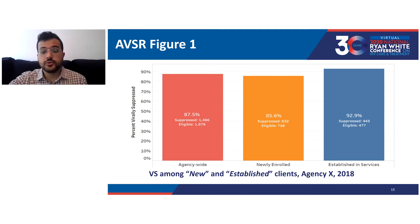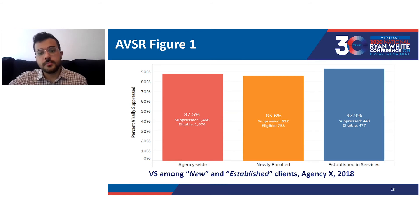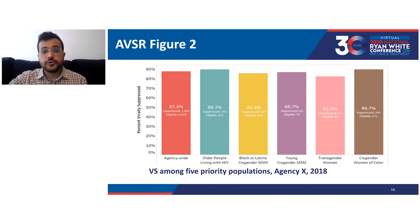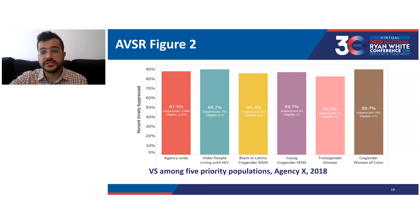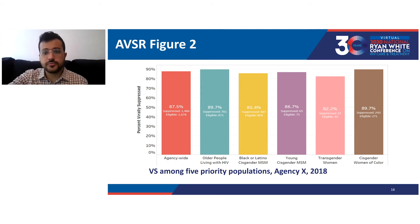Since the agency has had more time to address their needs and barriers, established clients tend to show higher viral suppression. However, not all agencies bear out that expectation, and we will look at that in the next section when we go over the results from the 2018 AVSRs. Figure two of the AVSR consists of six bars showing the percentage of clients virally suppressed agency-wide in the red bar — the same value from figure one — and then viral suppression among the five priority populations: older people living with HIV, Black or Latino cisgender MSM, young cisgender MSM, transgender women, and cisgender women of color.